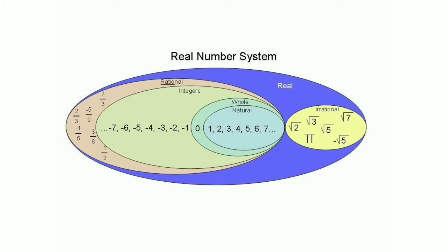The rational numbers consist of, if you see the innermost portion, you have 1, 2, 3, 4 and so on — the counting numbers, that is the natural numbers. If I add 0 to it, I get the set of whole numbers. Adding the negative numbers, I get the integers. Then adding fractions in the form of P upon Q, like 7 upon 3 or minus 5 upon 9, I get the set of rational numbers. These rational numbers together with irrational numbers like root 2, root 3, root 7, root 5 are called the real numbers.